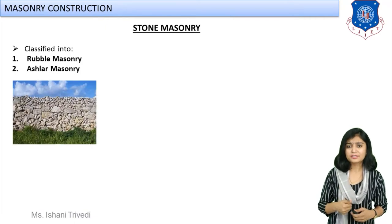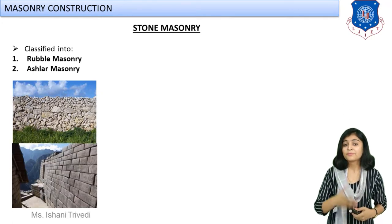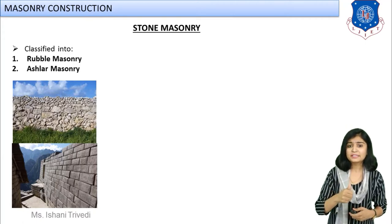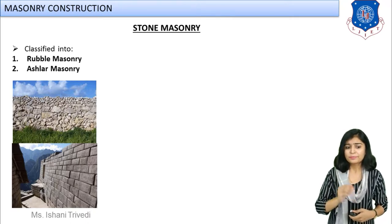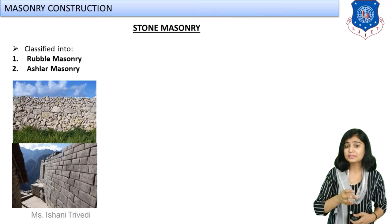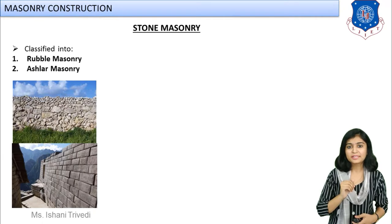Stone masonry construction is further divided into several types. Can you see the images flashing here? In one image you can see that the stones used are not of definite size, shape, and proportion. But in the picture below, the stones are made true to their shape — rectangular, with finished surfaces, at a proper definite size and dimension, just like bricks.